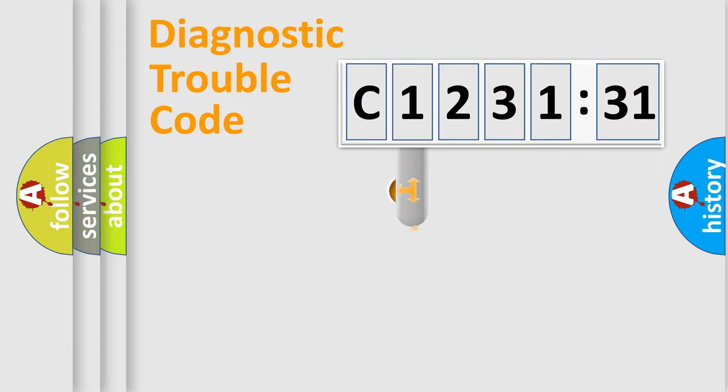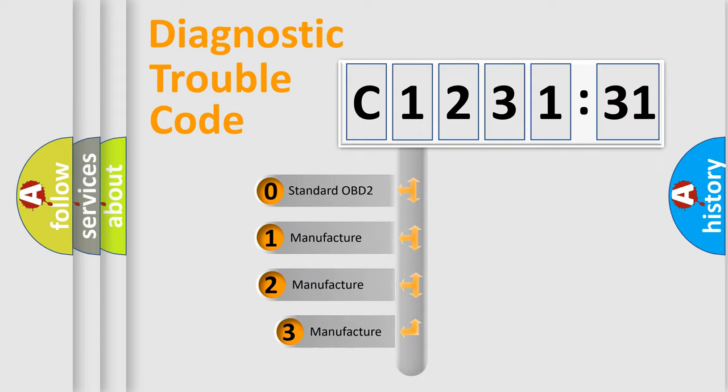Powertrain, Body, Chassis, Network. This distribution is defined in the first character code.